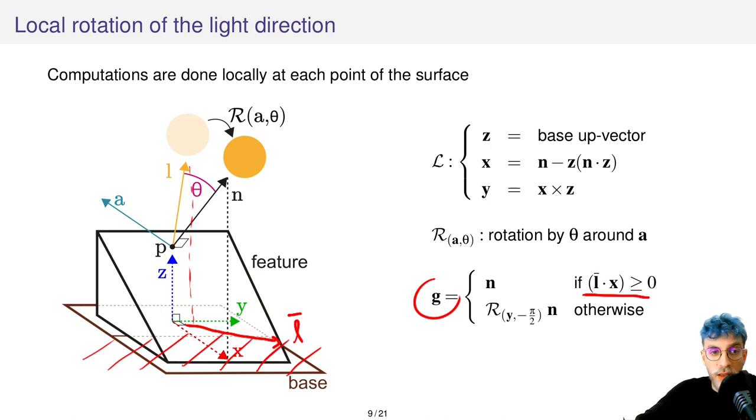So what we are doing basically is just checking whether L and N are pointing in the same direction with respect to this local frame. If it's the case, we will brighten the point. If not, we will darken it.